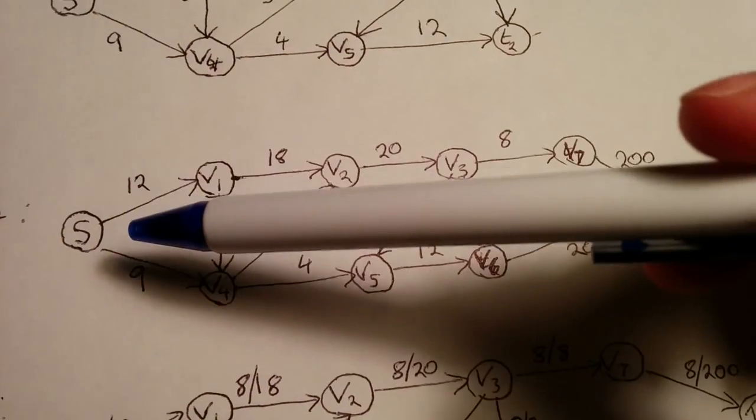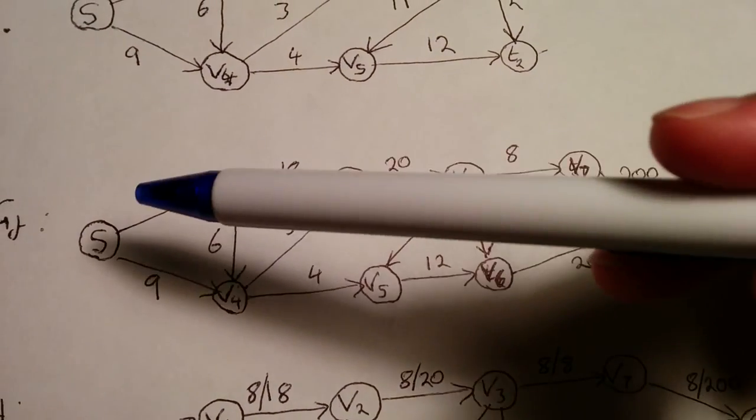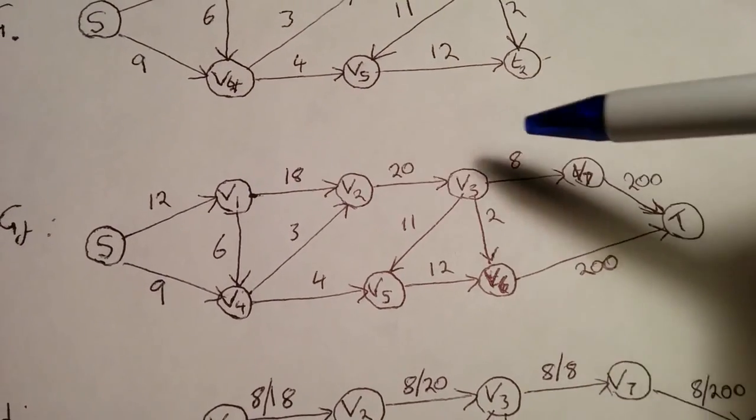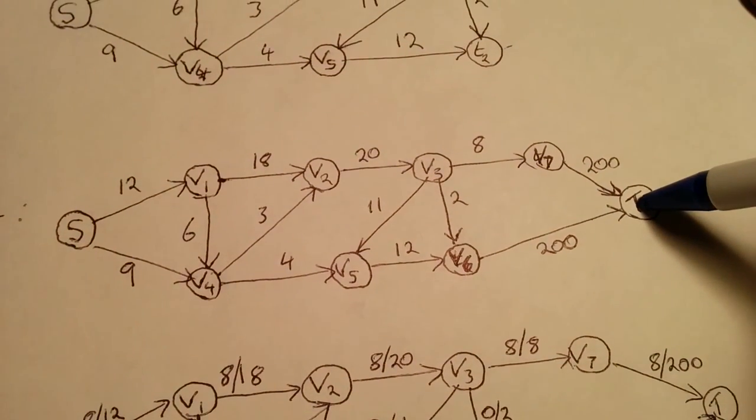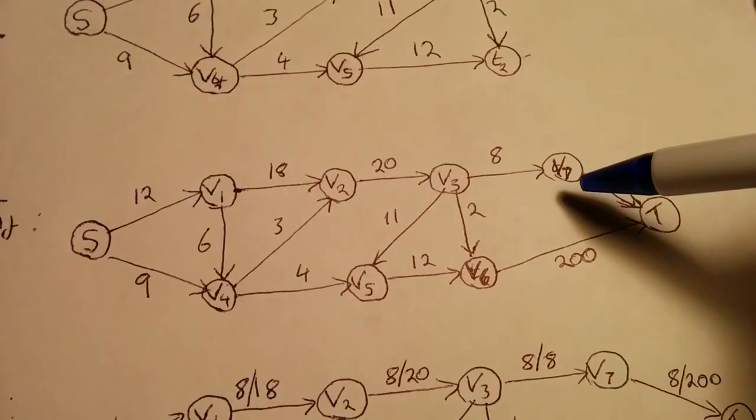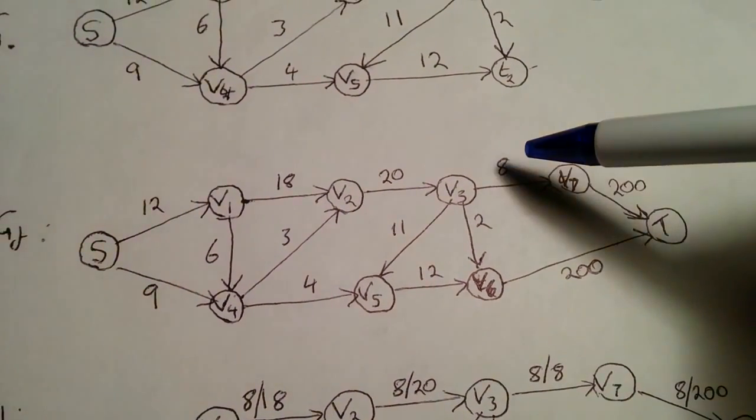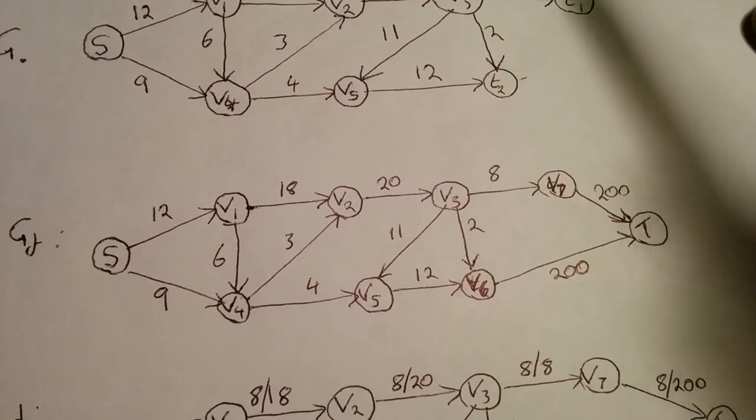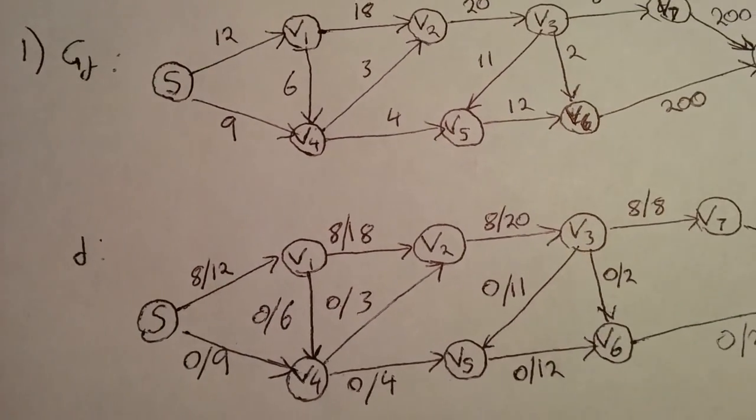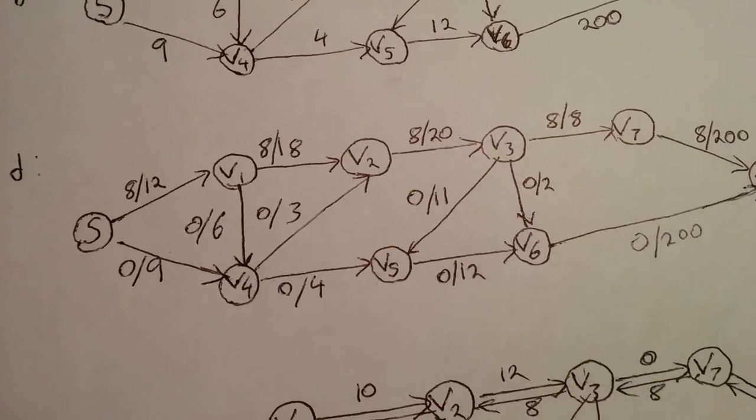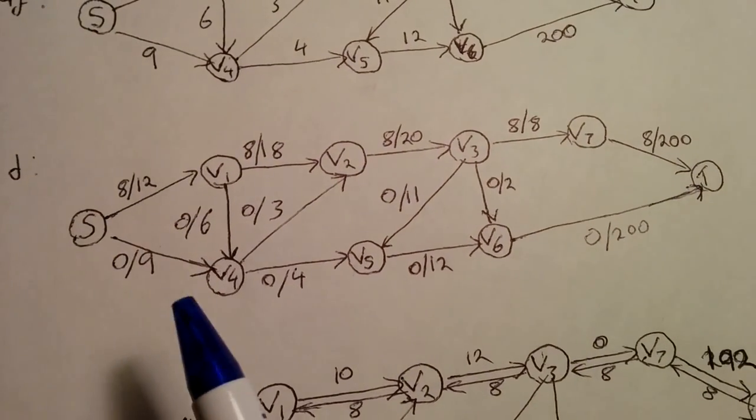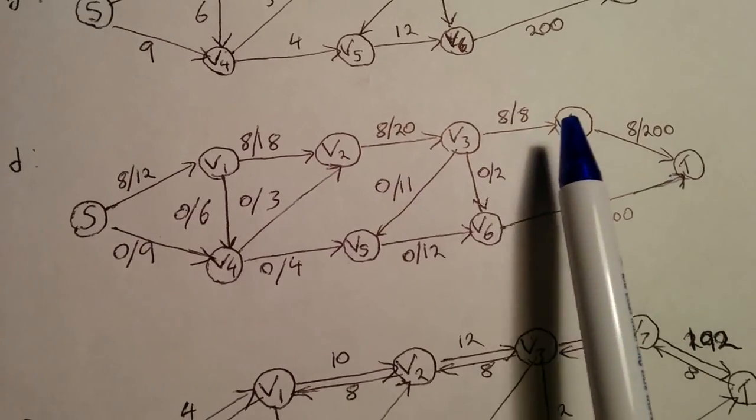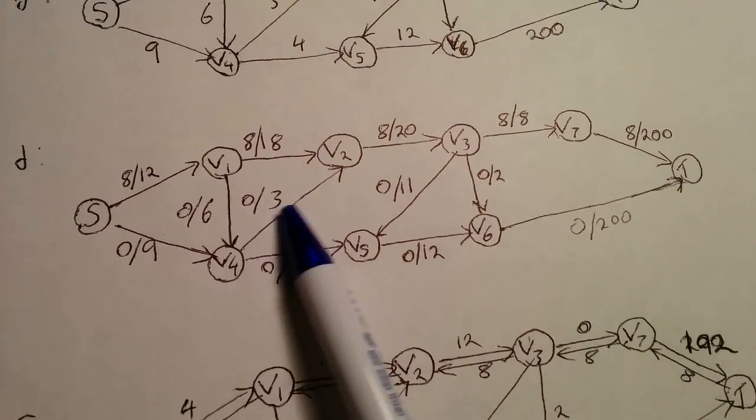So, by looking at this network, we see that we can push a value of 8 across the augmentation path S to V1 to V2 to V3 to V7 to T. And because 8 is the smallest value, we call this the residual capacity, because this really limits how much we can push along this path. So going forwards, we can see that we've now updated this in the F graph, and we show that because we've pushed 8 across, we've used 8 out of 12 for the entire capacity. So we've updated each of these values, and the rest of the values for the rest of the graph that we didn't touch remain at 0.